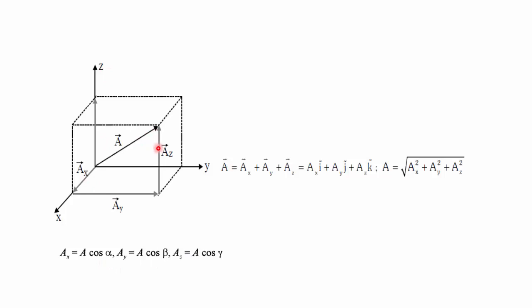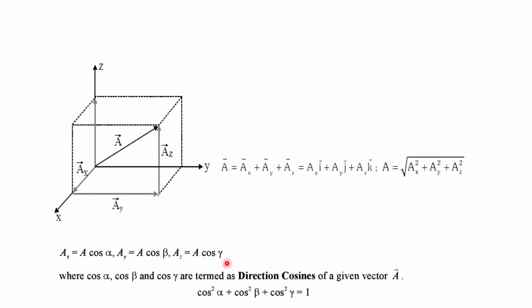We can also determine the relation using direction cosines: Ax equals A cos alpha, Ay equals A cos beta, Az equals A cos gamma — similar to how we used sine theta and cos theta in 2D. Here, cos alpha, cos beta, and cos gamma are called the direction cosines, and they satisfy the relation: cos squared alpha plus cos squared beta plus cos squared gamma equals one.